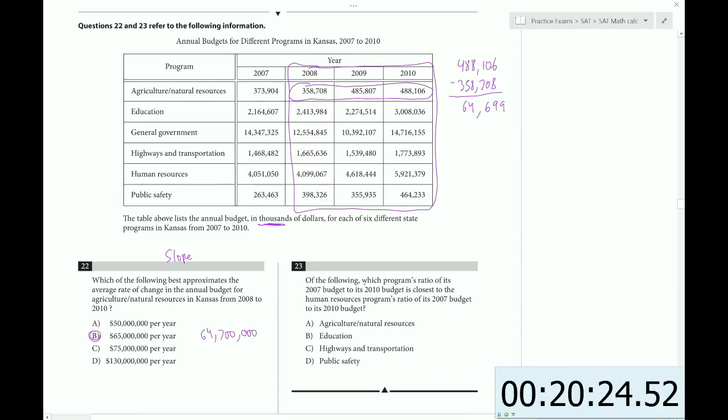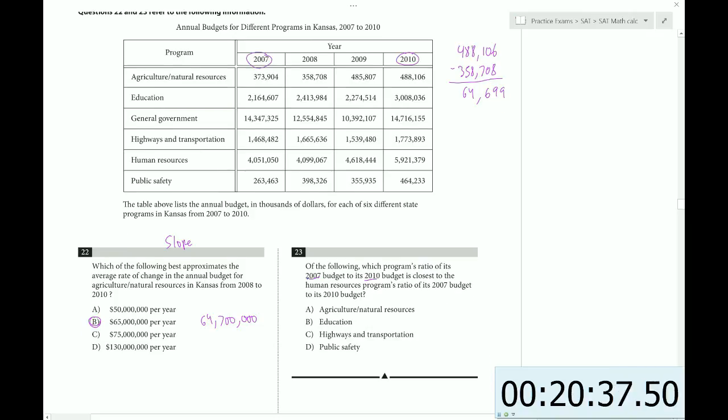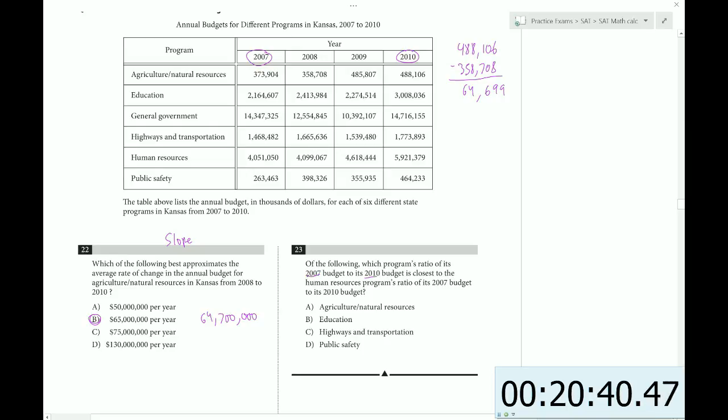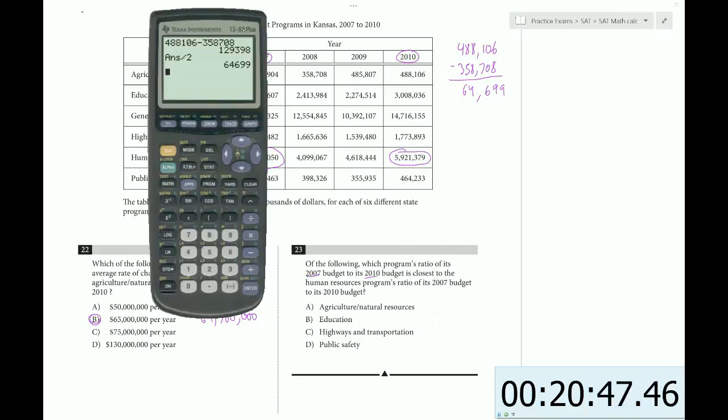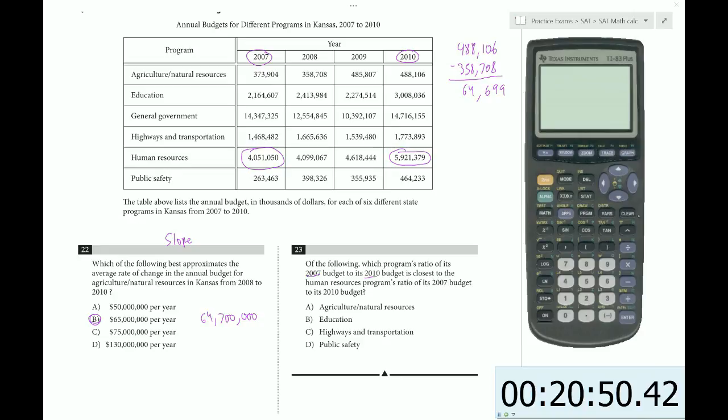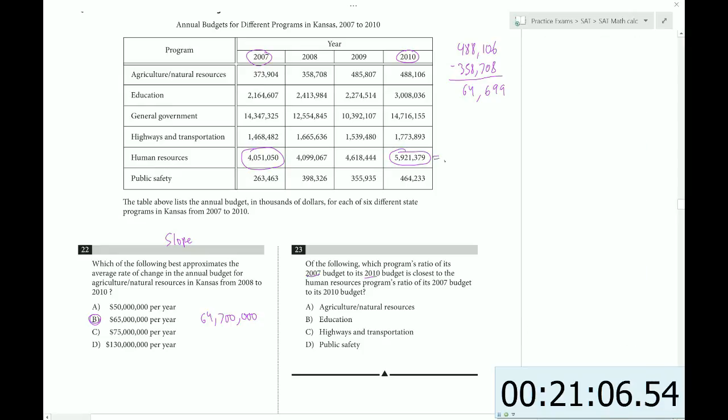Which of the following, which program's ratio of its 2007 budget to its 2010 budget is closest to the ratio for human resources? Human resources is here. So if we divide those numbers, that'll give us our starting value that we're trying to aim towards. So we have basically 4051, I'm just going to leave out the last three numbers, divided by 5921, because we don't need that much accuracy. So 0.684 is approximately what we're dealing with here.